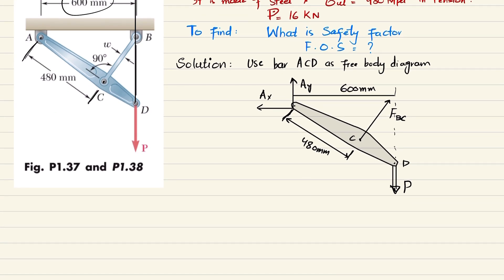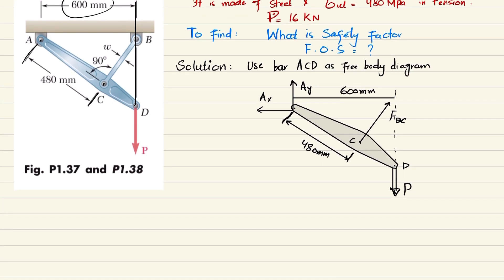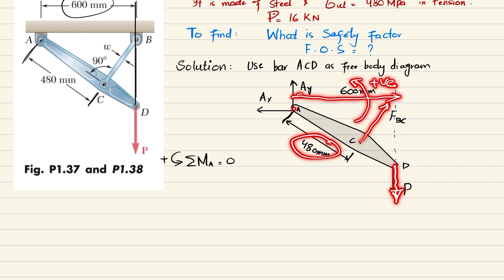Now we have the free body diagram. We can apply the equilibrium condition that sum of all moment about point A is equal to zero, taking counterclockwise movement as positive. The first moment is FBC times 480 producing counterclockwise, so it will be positive. The second moment is P times 600 producing clockwise, so it will be negative.